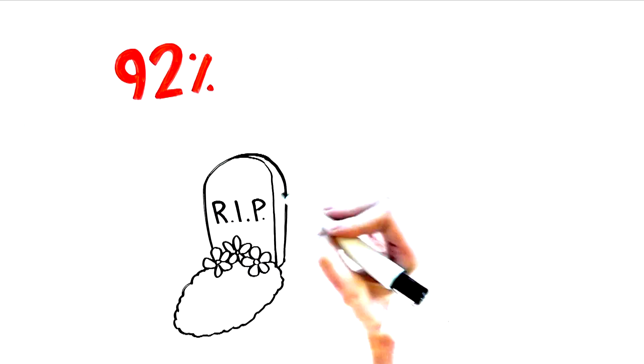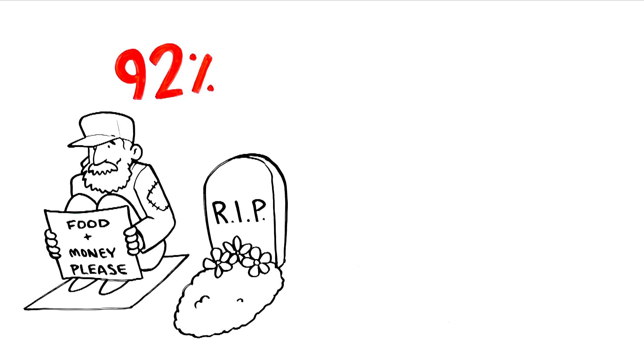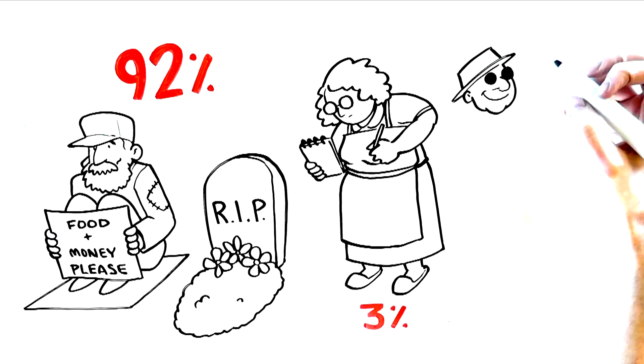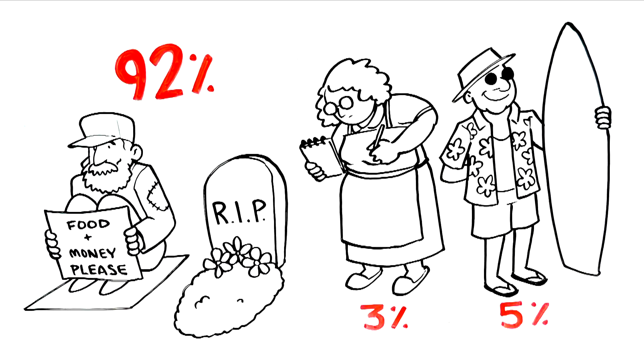No wonder the Census Bureau reported that 92% of Americans are either dead or broke by the age of 65. Of the rest, 3% are still working, and only 5% are financially independent.